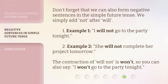Don't forget that we can also form negative sentences in the simple future tense. We simply add 'not' after 'will.' Example 1: 'I will not go to the party tonight.' Example 2: 'She will not complete her project tomorrow.' The contraction of 'will not' is 'won't,' so you can also say: 'I won't go to the party tonight.'